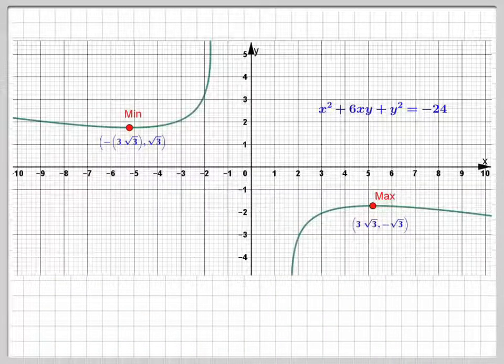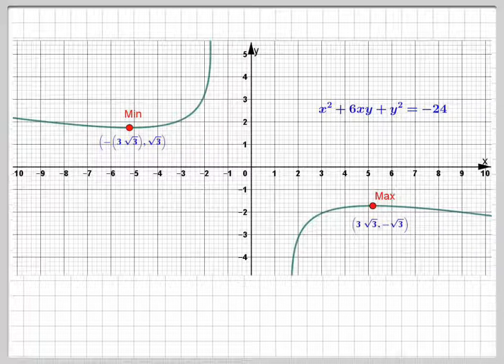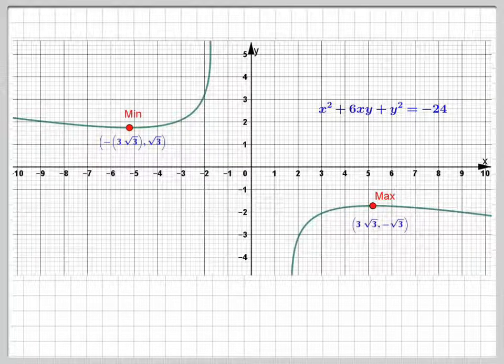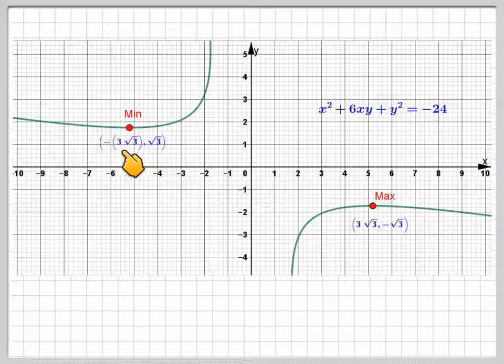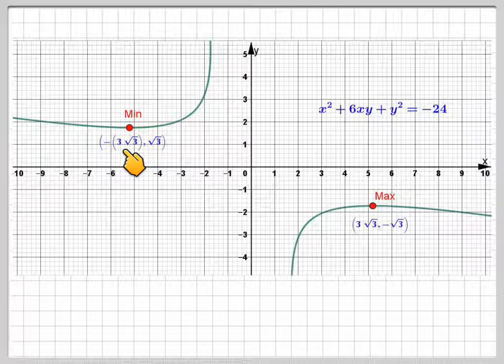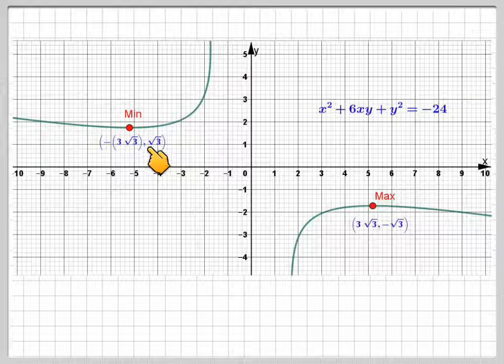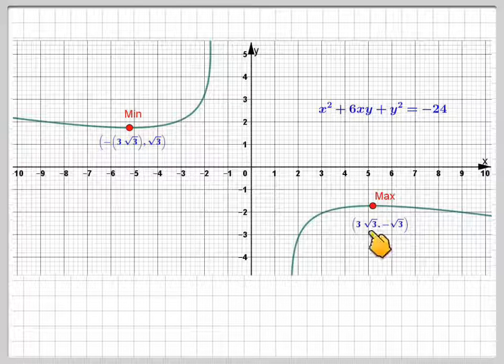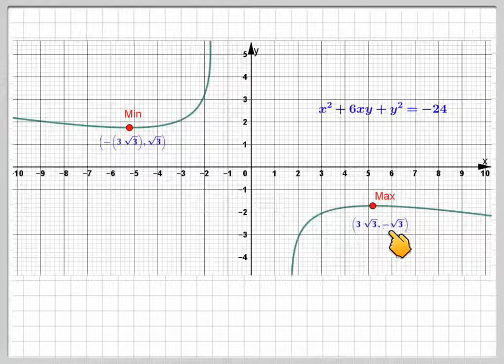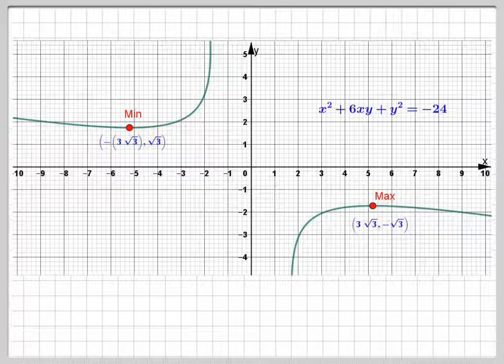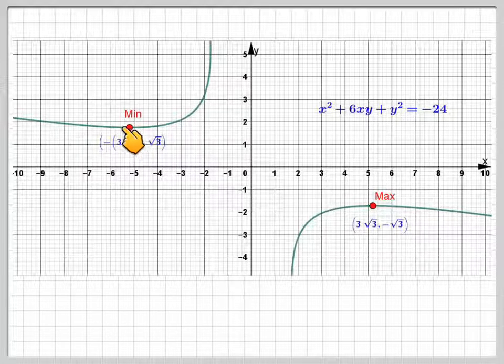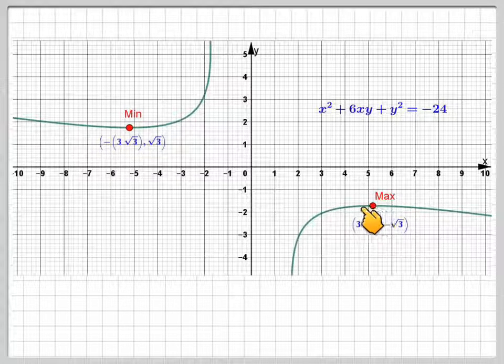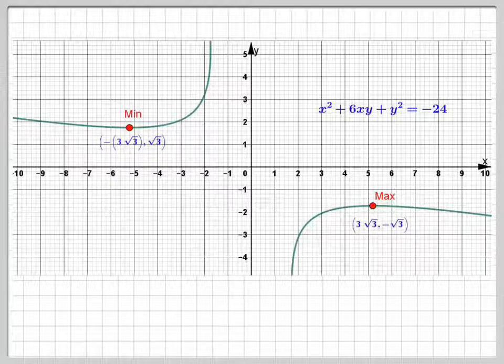Now we can look at this with a diagram here, so here's the curve. And we can see here we get minus 3 root 3, root 3, and here we get 3 root 3, minus root 3. These are turning points, but this will be a minimum point, the turning points where the curve turns, and this is also a turning point as well.